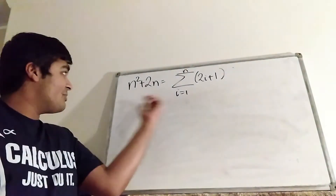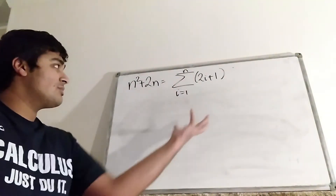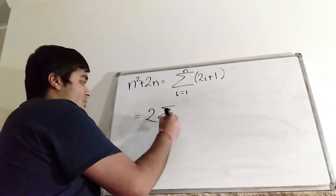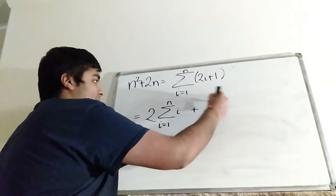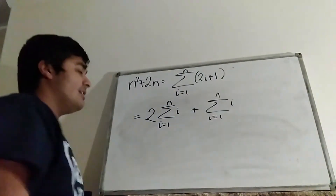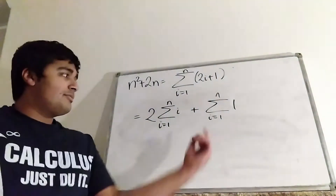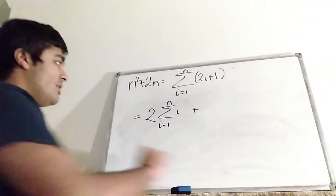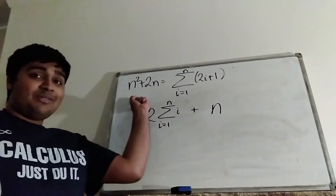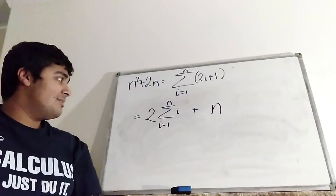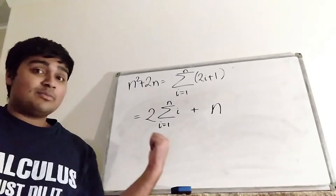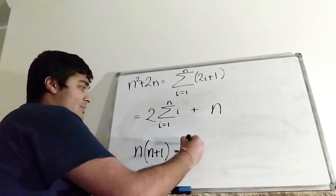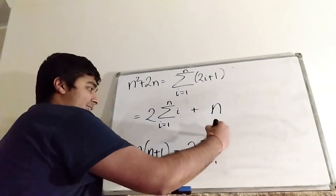Carrying on from here: n² plus 2n equals the sum from i equals 1 to n of (2i plus 1). We can expand this using linearity — it's 2 times the sum from i equals 1 to n of i, plus the sum from i equals 1 to n of 1. But that last sum is just n, since we're adding 1 n times. So n² plus 2n equals 2 times the sum from i equals 1 to n of i, plus n. Subtracting n from both sides gives n² plus n, which is n(n+1), equals 2 times the sum.